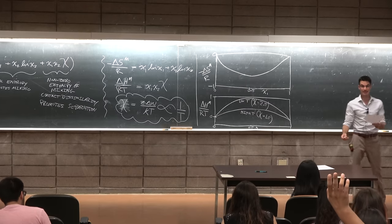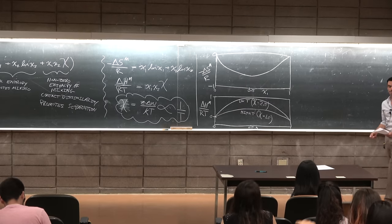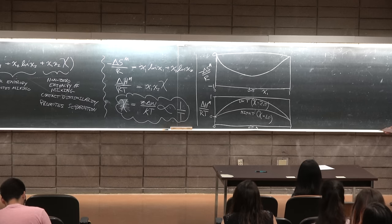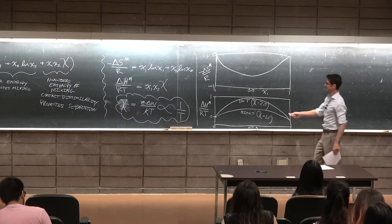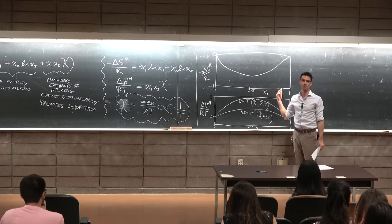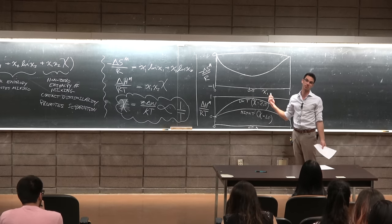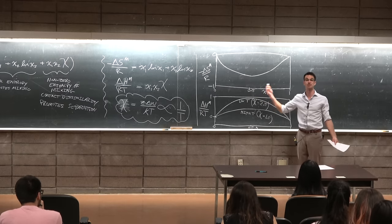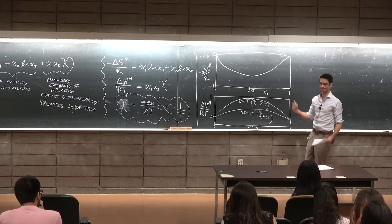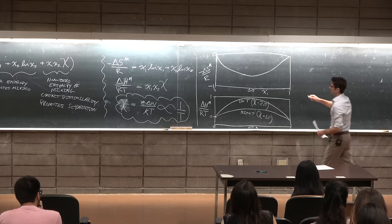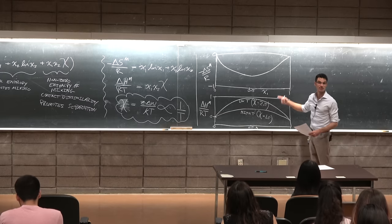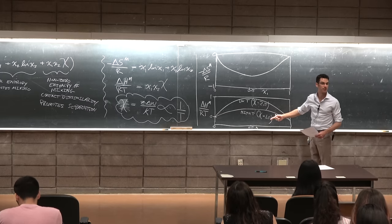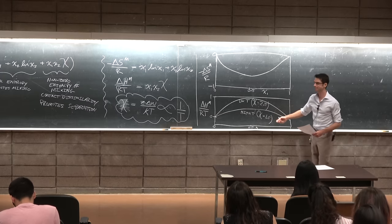Student question: could you restate what's on the x-axis? The x-axis is the mole fraction x₁ — but it could also be x₂, because it's symmetric. Delta G is just the entropy term plus the enthalpy term for different chi values.